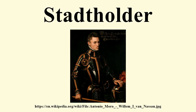A stadtholder, literally 'placeholder', was a term for a steward or lieutenant. In the Low Countries, the stadtholder was a medieval function which during the 16th, 17th, and 18th centuries developed into a rare type of de facto hereditary head of state of the Republic of the Netherlands. It is comparable with the French title lieutenant and England's 16th century lord lieutenant. This position was tasked with maintaining peace and provincial order in the early Dutch Republic. The Dutch monarchy is a cognatic descendant of the first stadtholder of the young Republic, William of Orange, who was the leader of the successful Dutch revolt against the Spanish Empire.